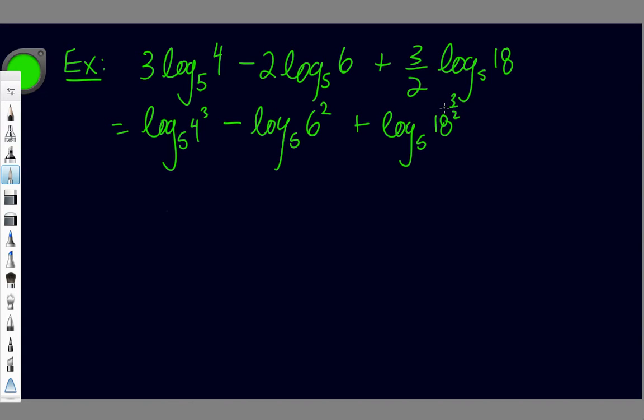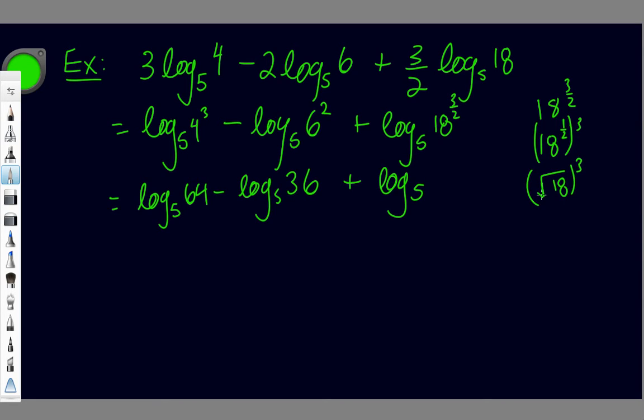So now this can be written - 3 over 2 is a rational exponent. So 4^3 is 64 minus log_5(36). And then I'll change this guy to log_5 - this can be written as 18^(3/2), can be changed to 18^(1/2) times 3. So that leaves me with the square root of 18 all to the 3. And the square root of 18 I can change to the same as 9 times 2, so I can change it to (3√2)^3.